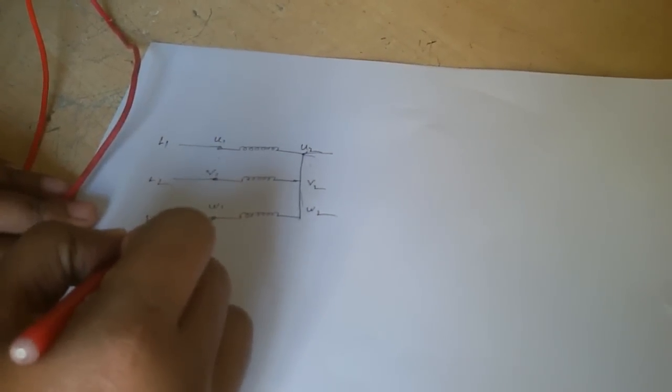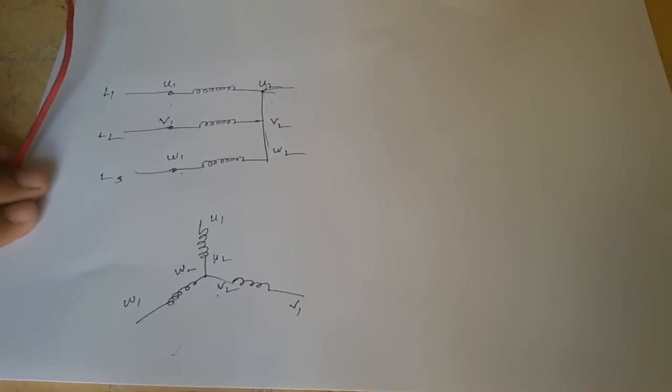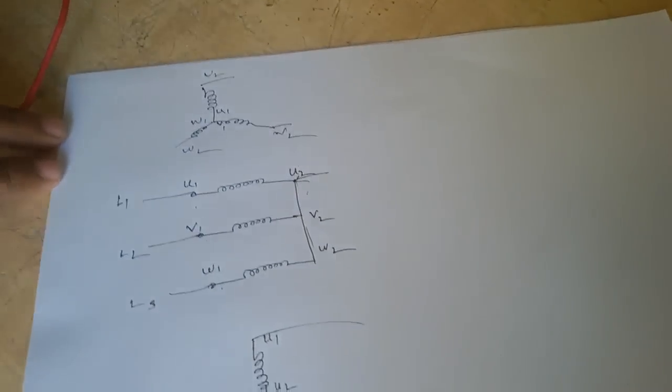And we call the other terminals the 3-phase line: Line 1, Line 2, Line 3. Here again with 3 coils and 6 terminals - U2, V2, and W2 are shorted together. And U1, V1, and W1 connect to the 3-phase supply lines. Here U2, V2, and W2 are shorted - this is the star connection.